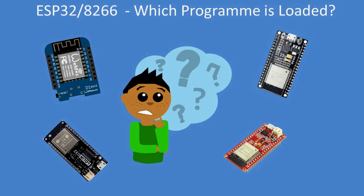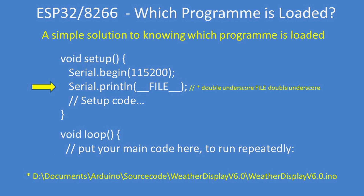Do you ever forget what program is loaded onto your development board? Here's a simple solution to help you remember. Try to get in the habit of adding one line: Serial.println(__FILE__), and every time your sketch starts it will display on the serial monitor the sketch name that was used to compile and program the board.